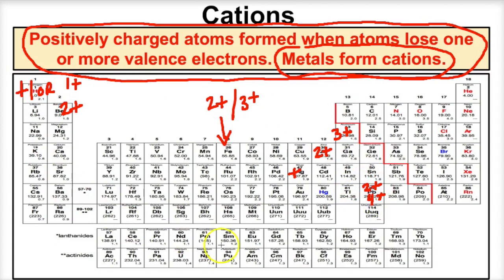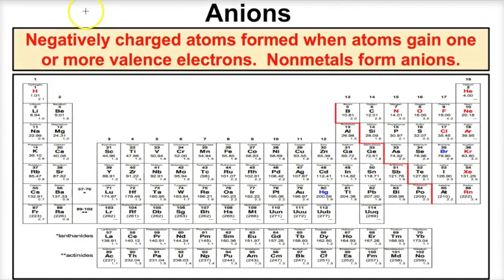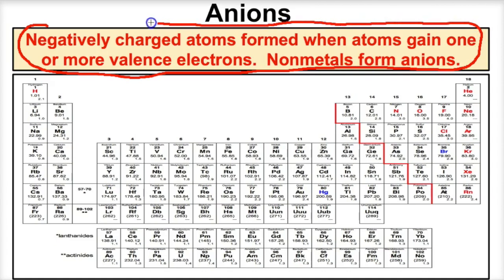For now, understand that metals form cations — positively charged ions produced when those metals lose one or more electrons. Anions are a little different. An anion is a negatively charged atom formed when atoms gain one or more valence electrons. When an atom gains one or more electrons — and electrons are negative — they become negatively charged ions called anions.